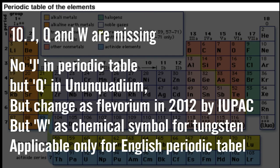In the periodic table, J is not equal to Q and W. There is an unknown element called Qnium, but it is known as Flerovium. W is the chemical symbol for Tungsten, but it is not an element name itself.